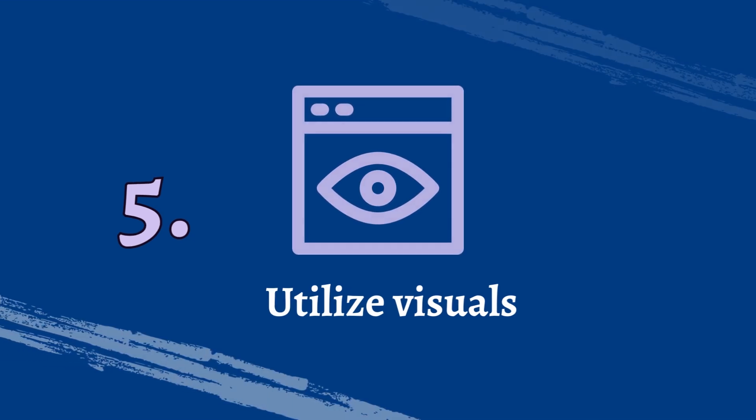Number five, utilize visuals. One of the great things about having a blog is you can enhance it with relevant images, videos, or infographics that make your content more engaging and visually appealing. It's a nice way for your audience to get to know your niche a little bit deeper, more visually.